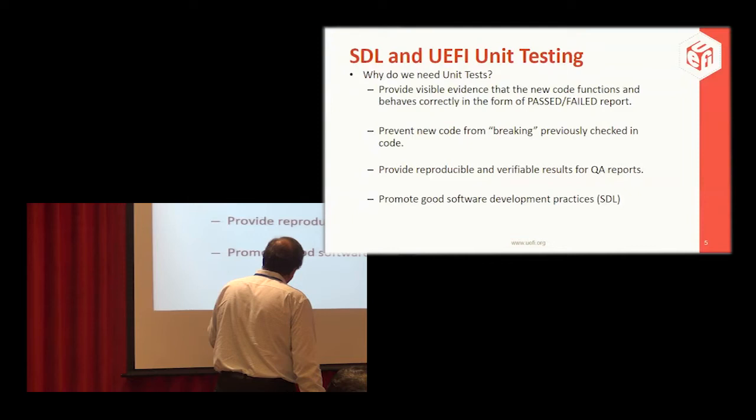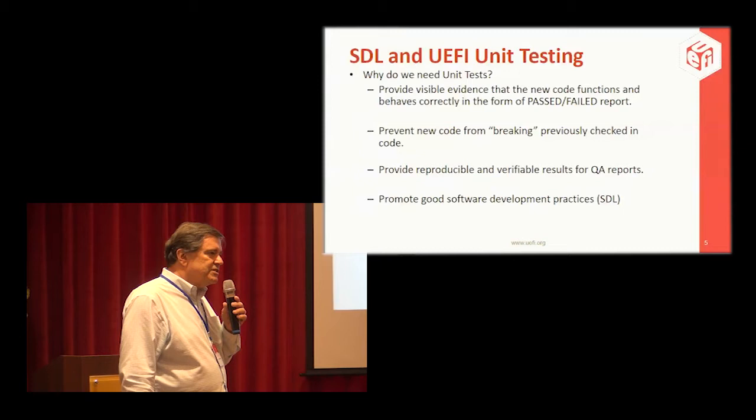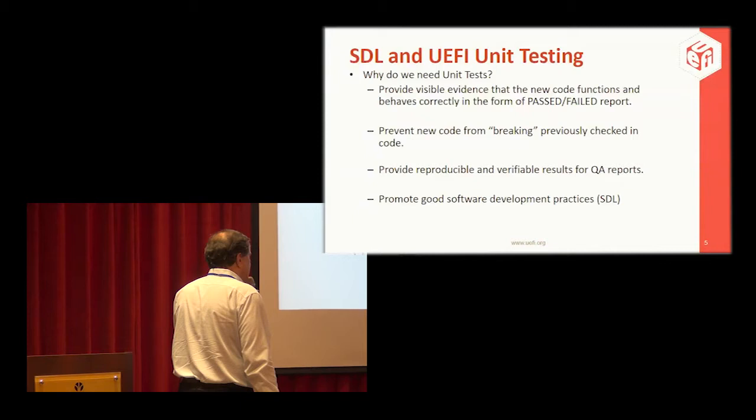You get a reproducible and verifiable result for QA reports. This is internal testing — QA is often done with external black-box testing. A unit test is intended for internal testing, and of course it promotes good software development practices.